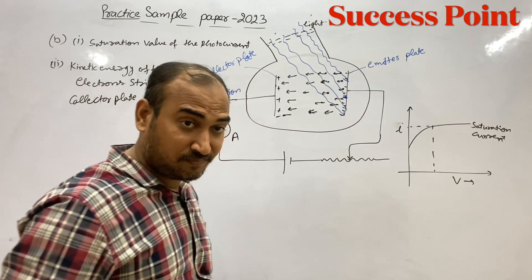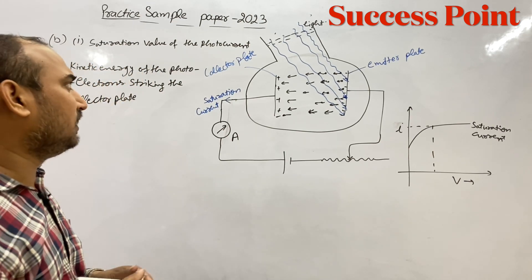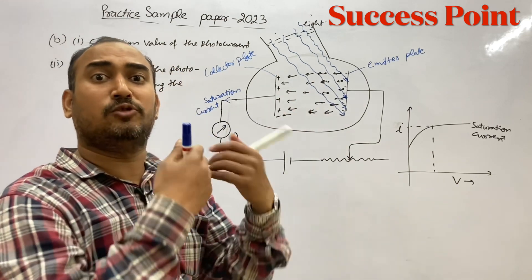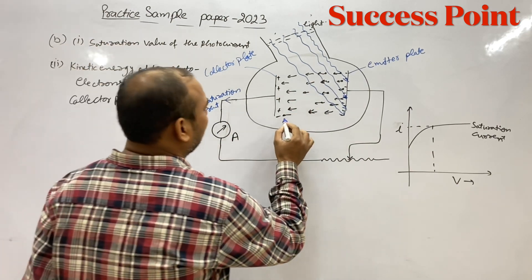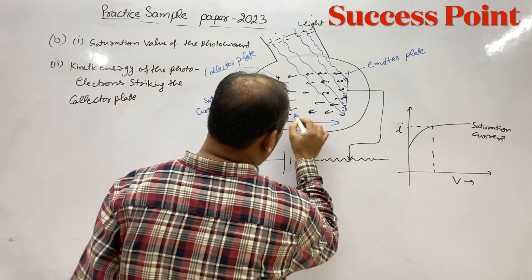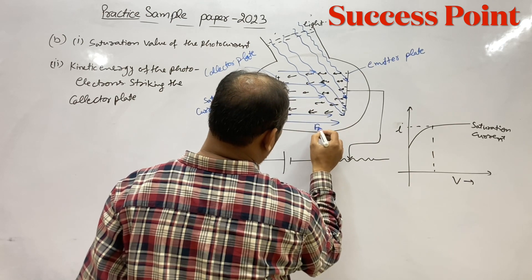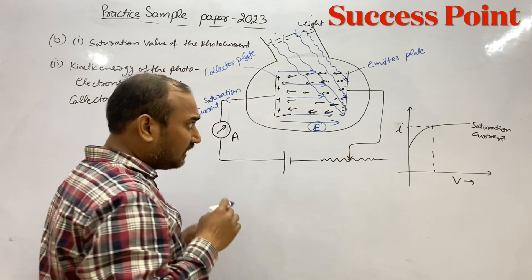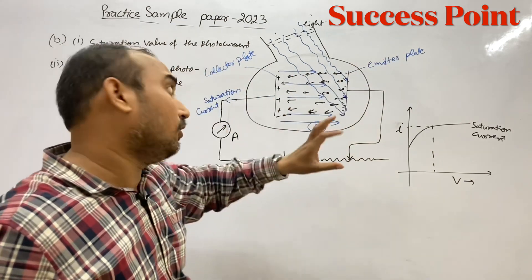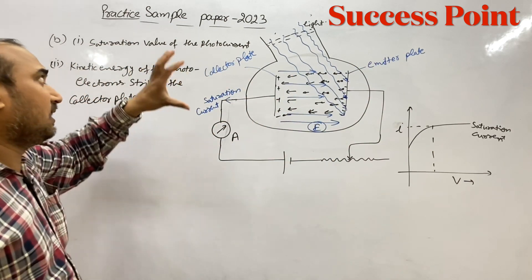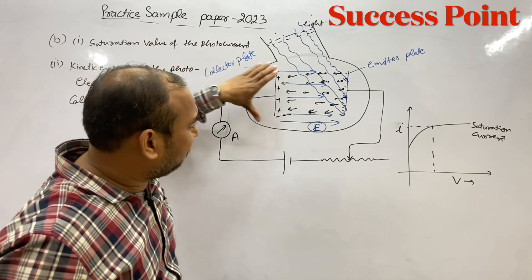अब क्या होगा अगर यहाँ plates के बीच में जिधर electrons चल रहे हैं उनके opposite में एक external field लगा दें? मतलब electric field को उस direction में apply करें जो electrons की motion के opposite हो। तो photo electric current पे क्या फर्क पड़ेगा जब electric field को opposite direction में लाते हो?